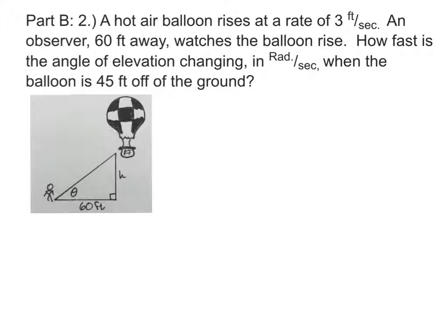A hot air balloon rises at a rate of 3 feet per second. An observer 60 feet away watches the balloon rise. How fast is the angle of elevation changing in radians per second when the balloon is 45 feet off the ground?